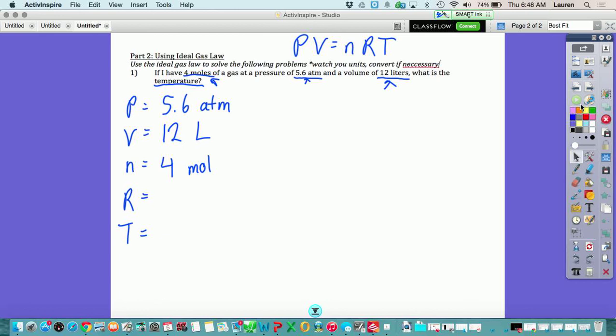R is always going to be 0.0821 liter atmospheres over moles Kelvin. And T is what we're solving for. That's our unknown.